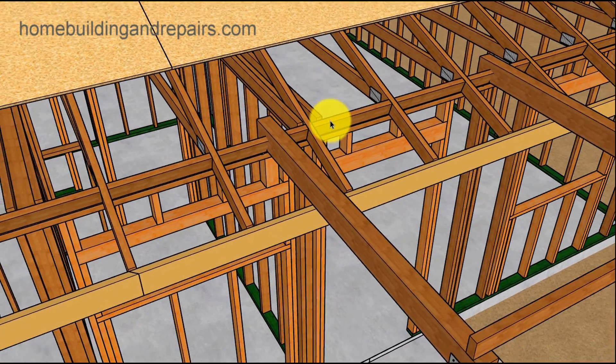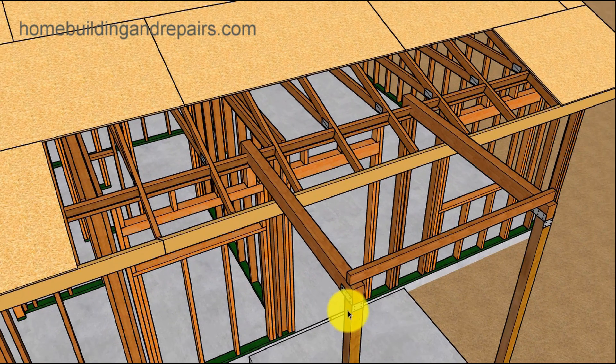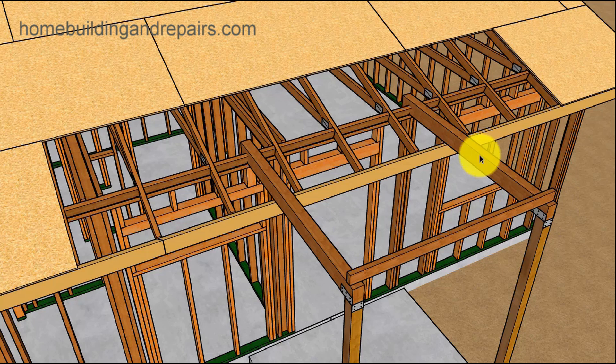Now let's go ahead and pan away here, get a different view. We can see here how the post and the beams, everything is connecting together. This is going to be the core load bearing structure of our roof.